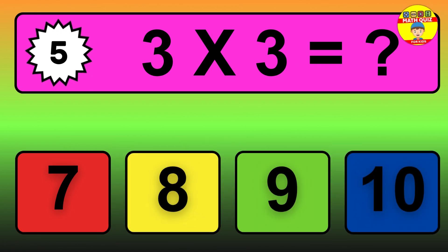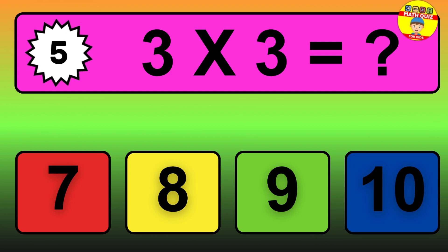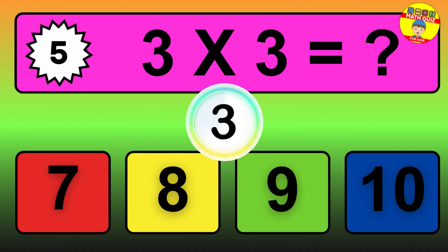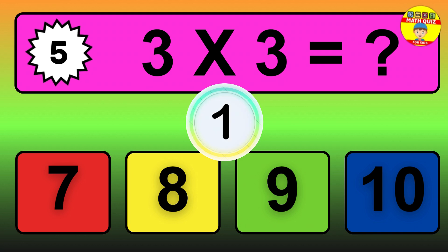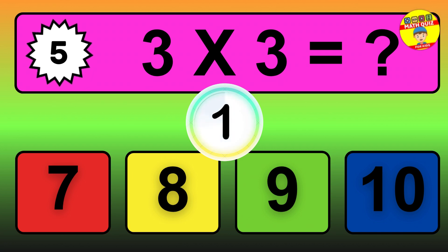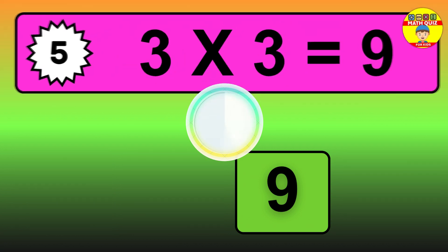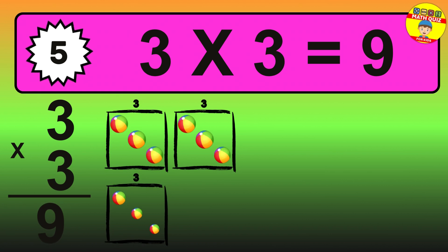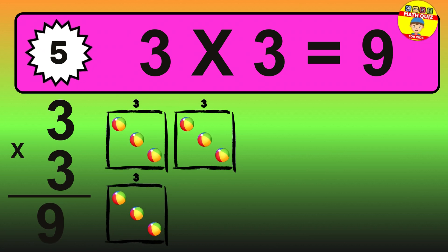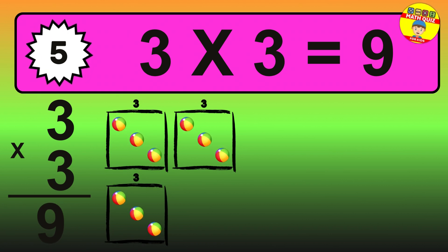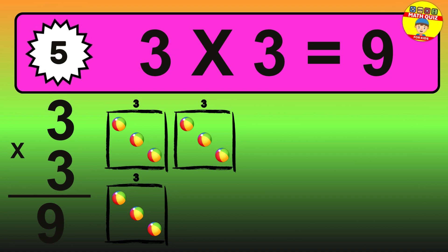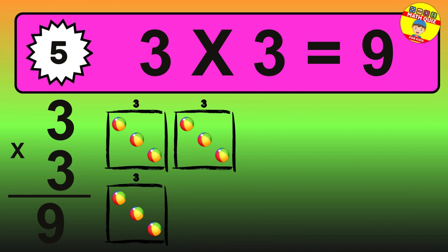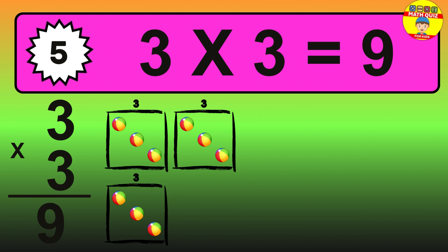Question 5. 3 times 3 equals what? The answer is 3 times 3 is 9. To calculate, we have 3 groups with 3 balls each one. So, how many balls do we have? 9 balls.